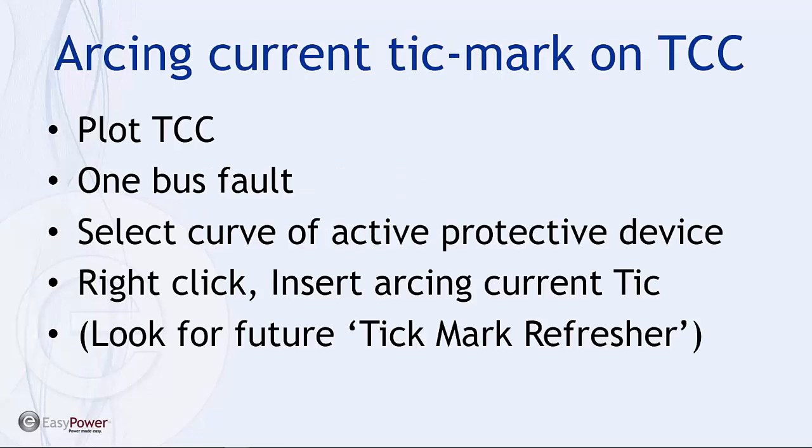Basically, there's a very simple procedure to put a tick mark representing the arcing current on any particular bus involving EasyPower. And that is, you plot the TCC, then you fault a single bus, and then you select the curve of the active protective device, that device that is tripping to quench the arc on that particular bus. And then by right-clicking on the curve of that device and requesting that the tick mark be inserted for the arcing current, it will show up on the TCC.